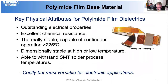Polyamide film is probably the most common material for flex circuits. It's a very rugged material with outstanding electrical properties, excellent chemical resistance, thermal stability, and capability of continuous operations above 225 degrees C. It is dimensionally stable at high and low temperatures, has a relatively high moisture absorption rate, is able to withstand SMT solder process temperatures, and is costly but the most versatile for electronic packaging. Polyamide does absorb moisture more rapidly than the epoxy-based materials; however, it also expels moisture easily, which is something to be concerned with for products where operation with moisture might affect stability.